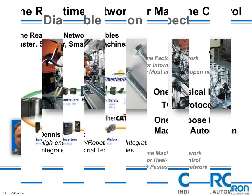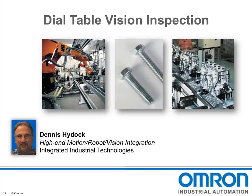Next, we'll show two applications emphasizing the scope of complete machine automation — one showing performance measured in cycle time, the other in practical usage. Dennis Heidock from I2T, a Pittsburgh-based systems integrator, will present the dial table vision inspection system. I2T provides specialized high-end complex motion applications with robots, vision, and PLCs using various automation manufacturers, and has been doing this for over 20 years. They are an Omron solution provider serving automotive, tire and rubber, glass, machine tool, metals, chemical, and packaging industries.